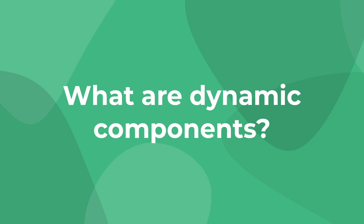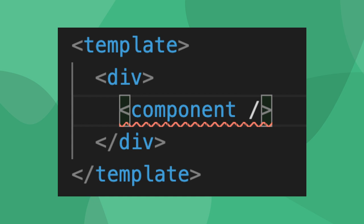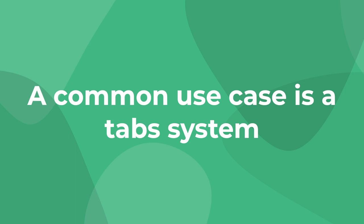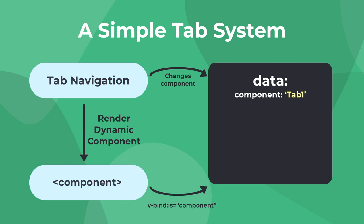When is this useful? Well first, we have to understand what dynamic components are — that's when we use a component element like this, and we can determine exactly what component is rendering in this element by using the v-bind:is directive. The most common example of this is a tab system. Depending on which tab is open, this component element will switch between a few different Vue components.